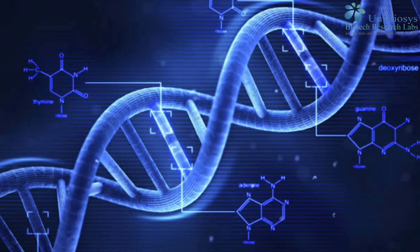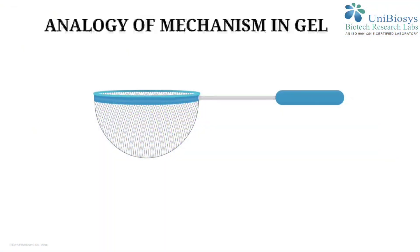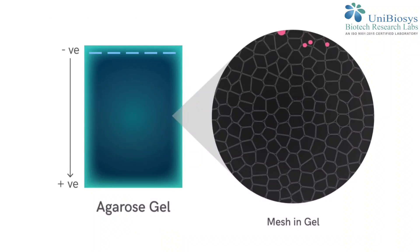DNA are negatively charged. In this method, we are moving these molecules through an agarose matrix with an electric field. Shorter molecules move faster and migrate farther than longer ones because shorter molecules migrate easily through the pores of the gel.